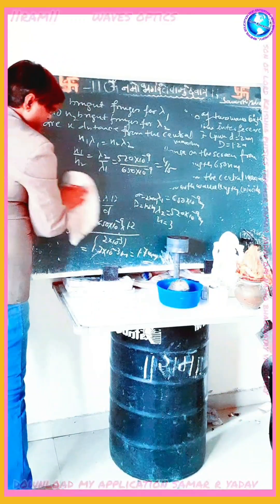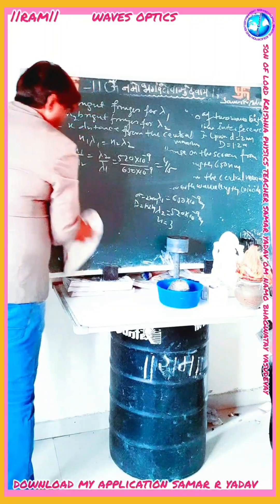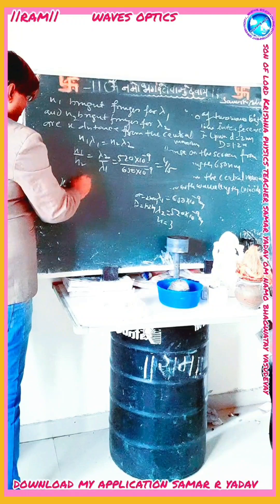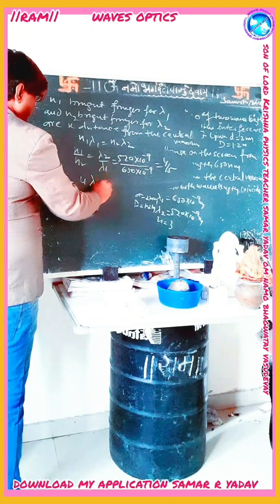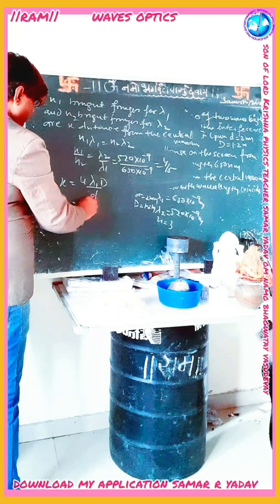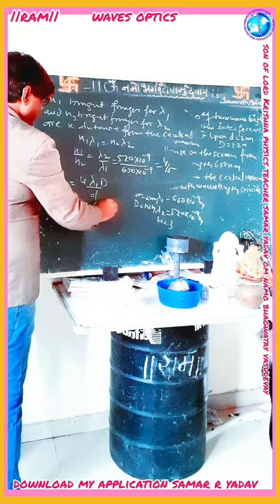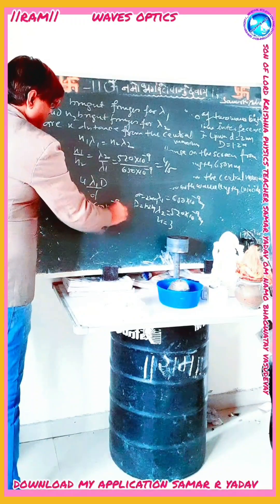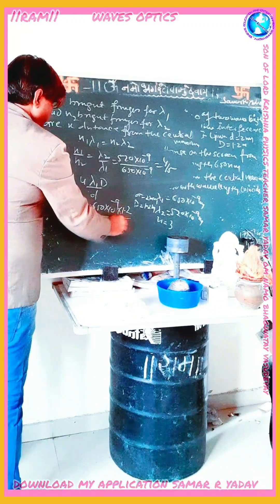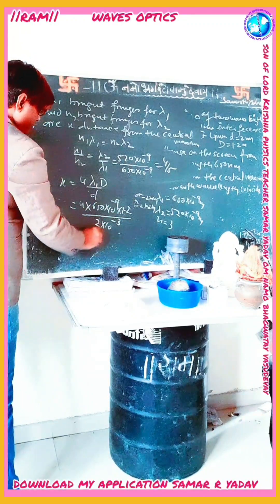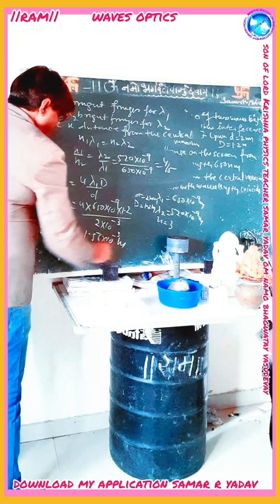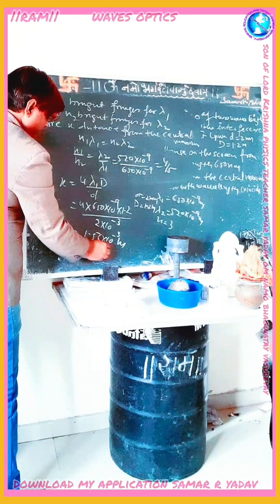Both are at the same distance, so n1 equals 4 and n2 equals 5. We write X equal to 4 lambda 1 capital D upon small d. Keeping the values: 4 into 650 into 10 to the power minus 9 into 1.2 divided by 2 into 10 to the power minus 3. We get 1.56 into 10 to the power minus 3 meter, or 1.56 millimeter.